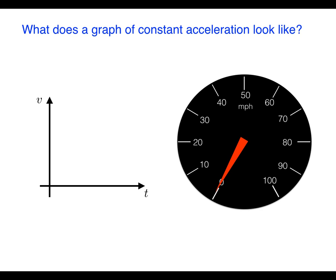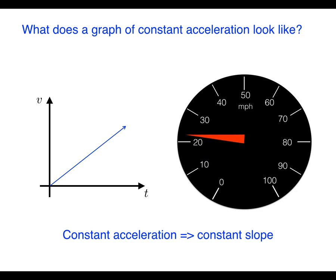So what does constant acceleration look like? Well we know from the last slide that motion with constant acceleration is going to involve a velocity versus time graph with a constant slope. There are lots of ways to do that and here's one example. Here's what that motion looks like on the speedometer. Notice that the needle is moving at a constant rate corresponding to a velocity that is changing at a constant rate.